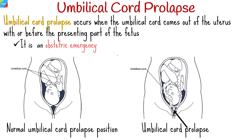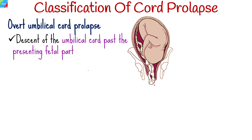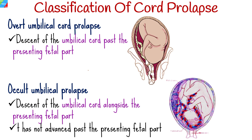Umbilical cord prolapse is classified into the following types. Overt umbilical cord prolapse is when there is descent of the umbilical cord past the presenting fetal part. Occult umbilical prolapse is when there is descent of the umbilical cord alongside the presenting fetal part but has not advanced past the presenting fetal part.